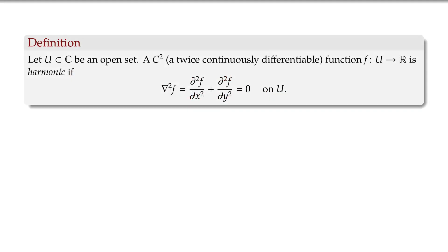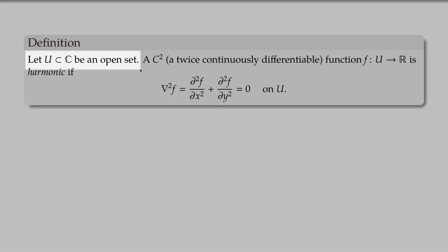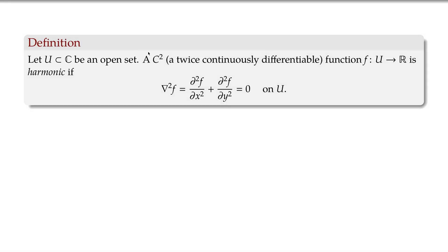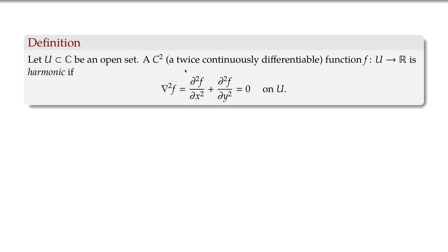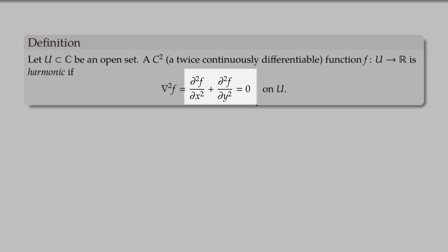Let's define what we mean by a harmonic function — it's a solution to the Laplace equation. We have an open set U as usual. Here we're going to assume that a function f is twice continuously differentiable in the real sense, so it just has real derivatives in x and y, and it's a real-valued function. We say f is harmonic if it satisfies the Laplace equation: the second x-derivative of f plus the second y-derivative of f equals zero. This is the trace of the Hessian matrix.